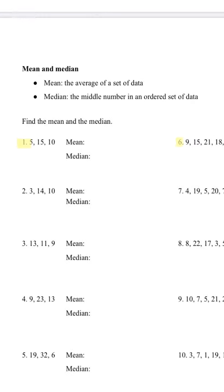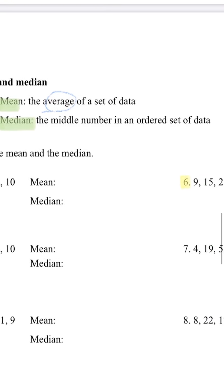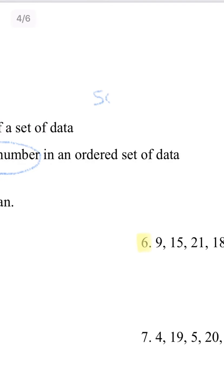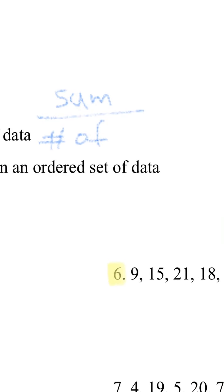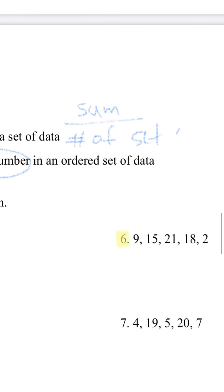Means and medians. A mean is the average of a set of data, and the median is the middle number in an ordered set of data. To get the mean, it's the sum divided by the number of values in the set of data.